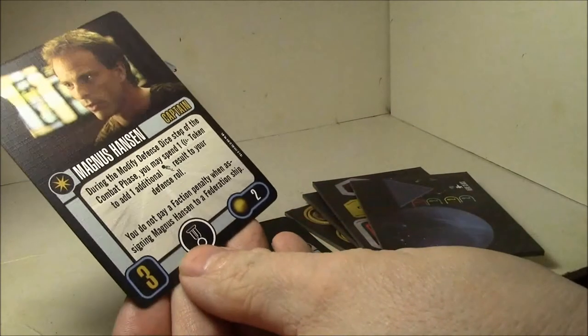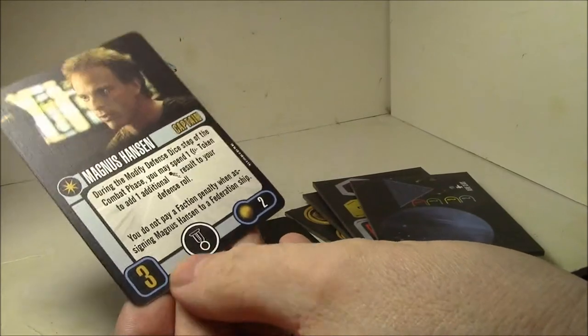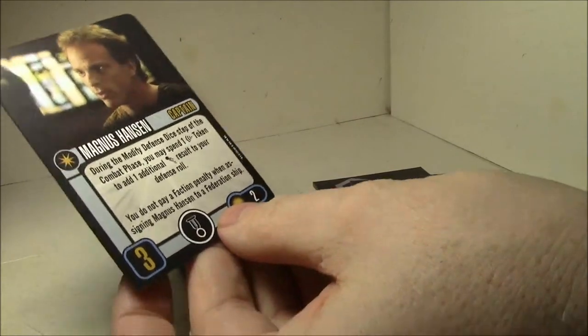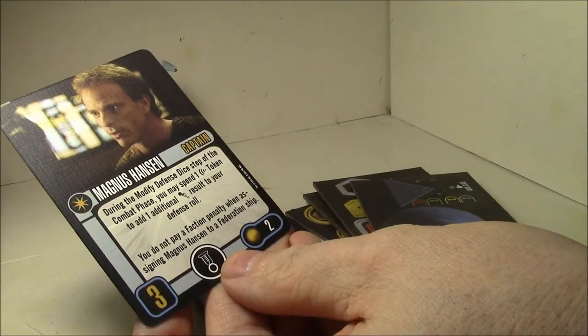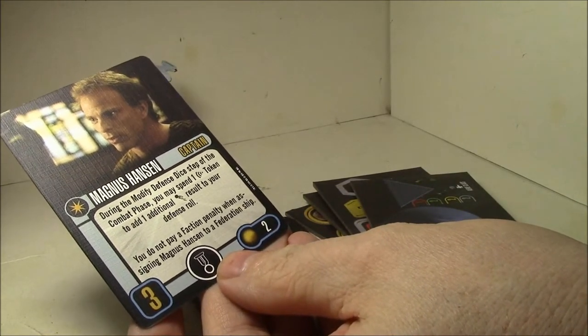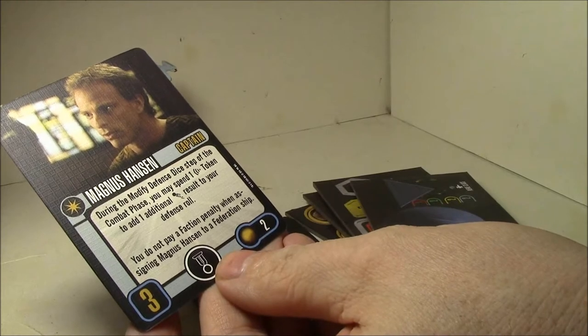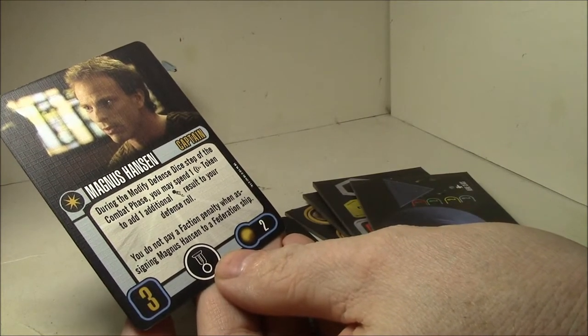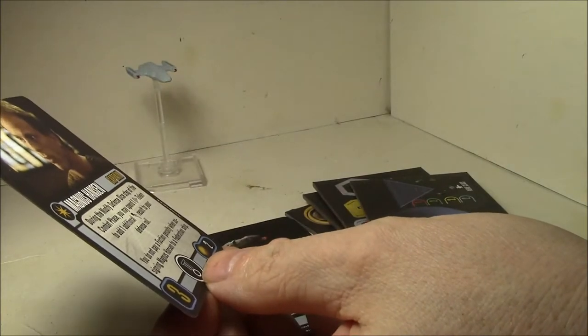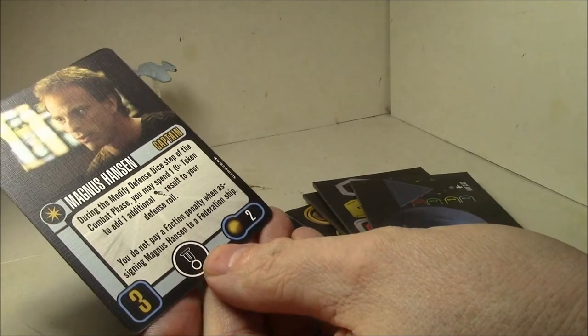Captain Magnus Hansen, three skill, elite talent, and only two points for an Independent. During the modify defense dice step of your combat phase, you may spend one scan token to add one additional evade result to your defense roll. And you do not pay a faction penalty when assigning him to a Federation ship.